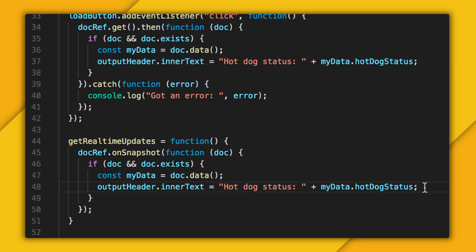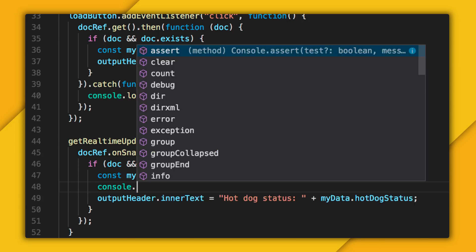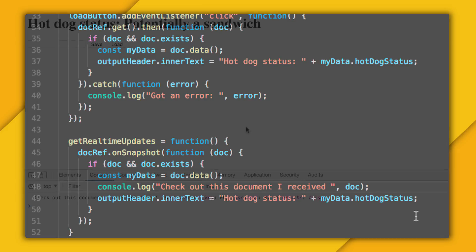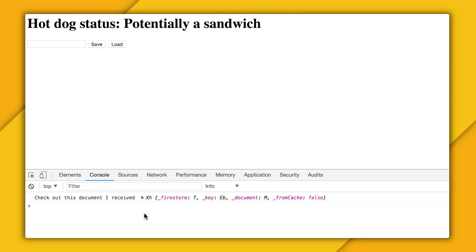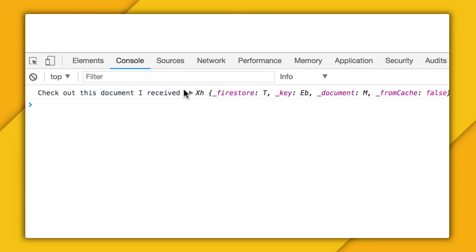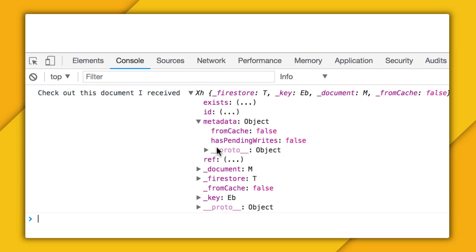Here, let me log my data to the console in my OnSnapshot listener. Now let's reload the page and take a look at this object that gets returned in my console. Here's the initial value that we loaded from the cloud. And let's expand this data object here. We can see that it has a metadata property. And by expanding that, we can see we have this value, pending writes, which is currently set to false, meaning basically that it came from our server.